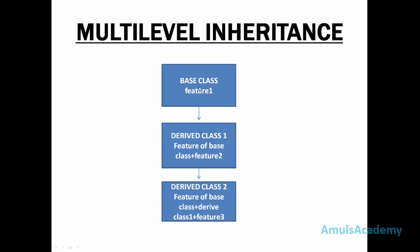The base class contains feature 1, and the first derived class contains the feature of the base class plus the feature of derived class 1. The second derived class contains the feature of the base class, plus the feature of derived class 1, and the feature of derived class 2.